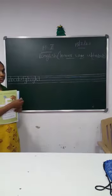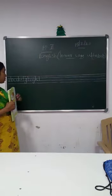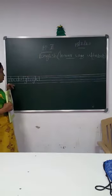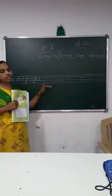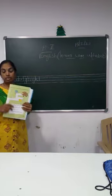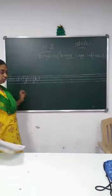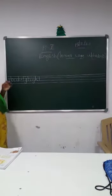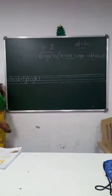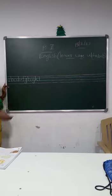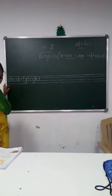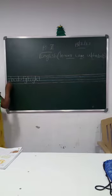Now let us see a recap from letter A to letter X, written in a four-line book. Then we will learn the other two letters. So now we have here letter A — let us start.